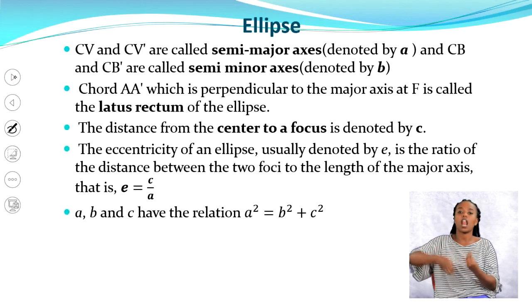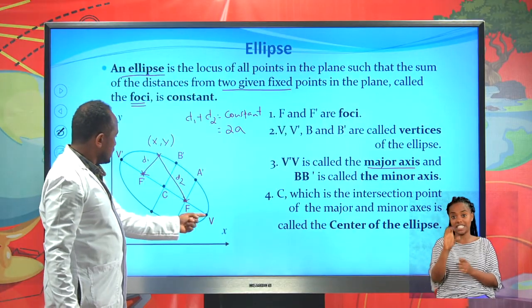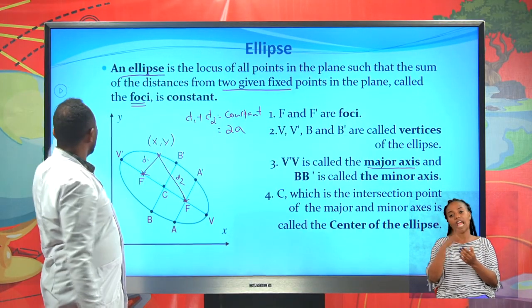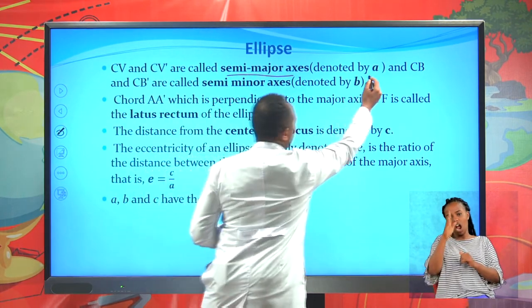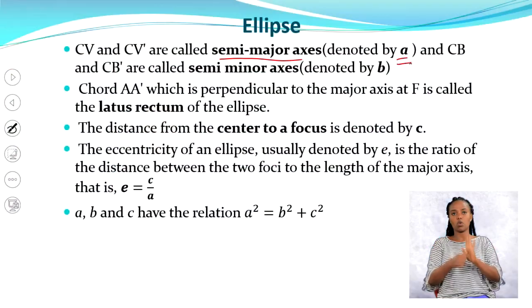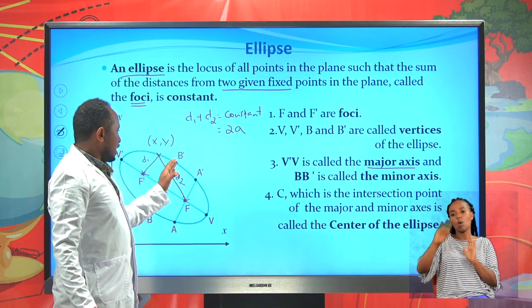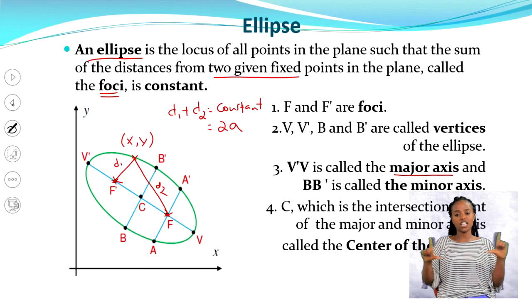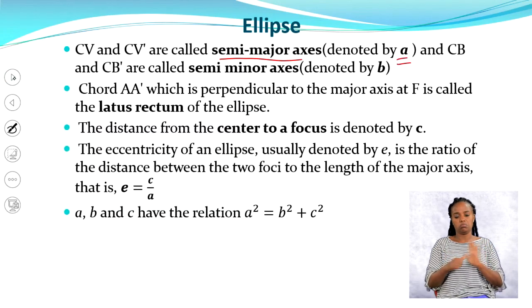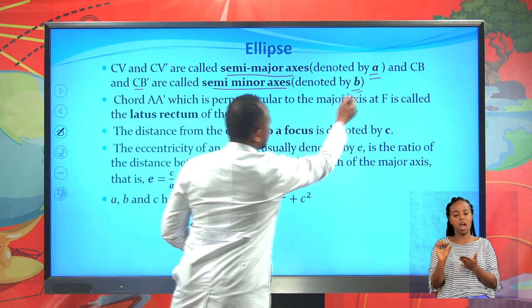The distances from center c to v and c to v prime are called the semi-major axis, and they are denoted by a. The distances from c to b and c to b prime are called the semi-minor axis and are denoted by b (small letter b). The chord a, a prime which passes through the focus perpendicular to the major axis, we call it the latus rectum of the ellipse.